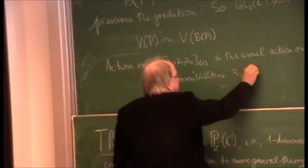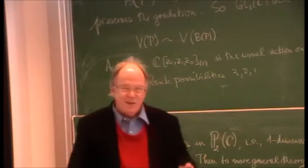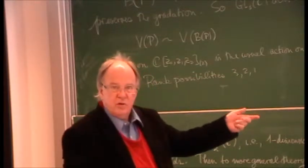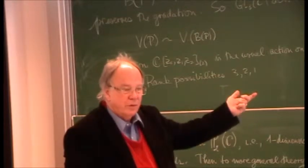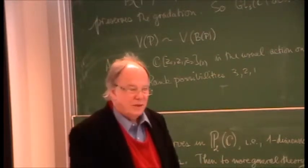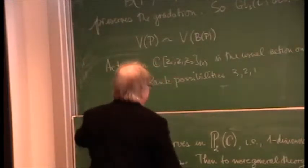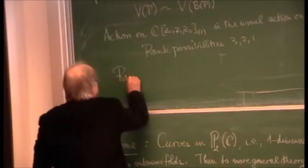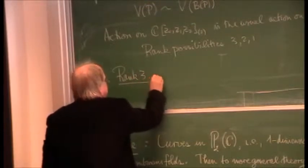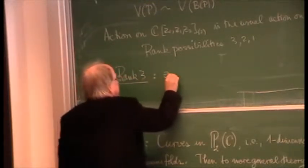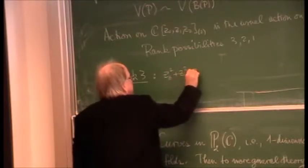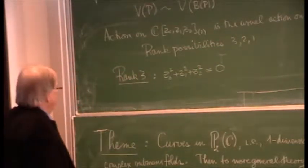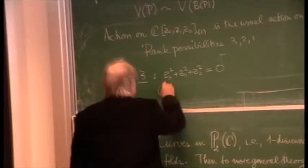What about rank zero? That's the zero polynomial, which I've excluded — the zero polynomial has zero set equal to the whole space. So the rank possibilities are 3, 2, and 1. Let's look at rank three. I take my friendly representative of rank three — we quite often call such things Fermat polynomials.